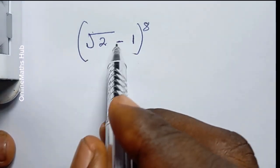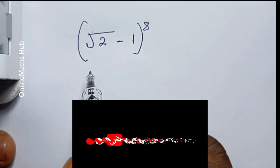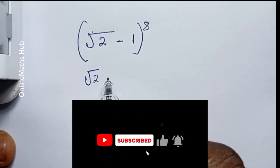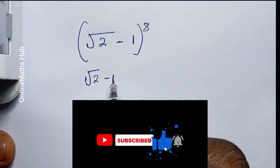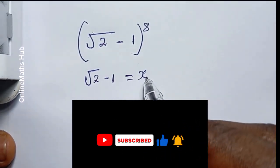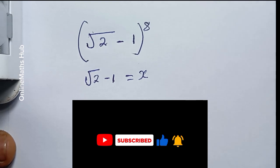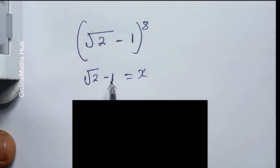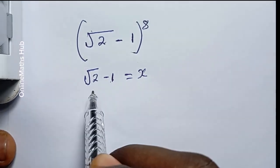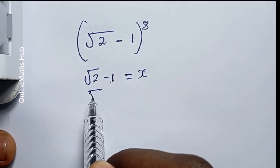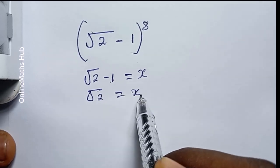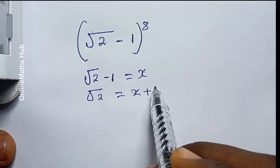What I'm going to do is set the stuff inside the bracket — that is √2 minus 1 — to be equal to a variable, let's say x. Then I'm going to move 1 to the right-hand side so that I have √2 equal to x plus 1.